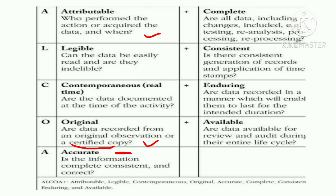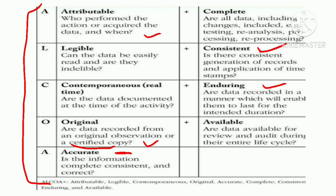Now the ALCOA concept is complete. ALCOA stands for Attributable, Legible, Contemporaneous, Original, and Accurate. Now we will see ALCOA++. The plus-plus indicates four additional terms. Complete means our data should be complete — there should be no incomplete data recorded in the document. Consistent means it should be recorded consistently in the same manner.